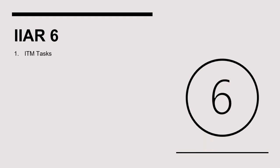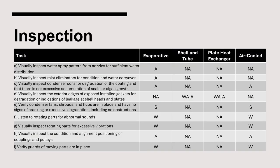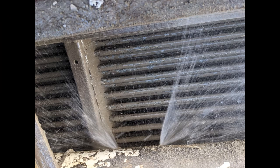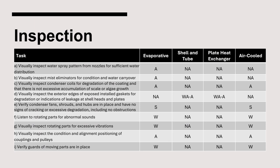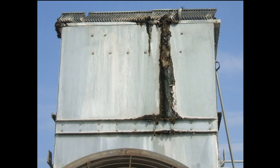Now let's turn our attention to the Inspection, Testing, and Maintenance requirements for condensers, contained in Chapter 8 of IIAR Standard 6. The ITM Table in Chapter 8 relates to evaporative, shell and tube, plate heat exchanger, and air-cooled condensers. The first inspection task requires visually inspecting the water spray pattern for sufficient water distribution on an annual basis for evaporative condensers. The spray nozzles are located above the condenser coil and spray down onto the coils containing ammonia. For forced draft evaporative condensers, the mist eliminators can be removed in order to view the spray nozzles. Condenser mist eliminators must be visually inspected on an annual basis. Here are some examples of mist eliminators that are in poor condition and must be cleaned or replaced.